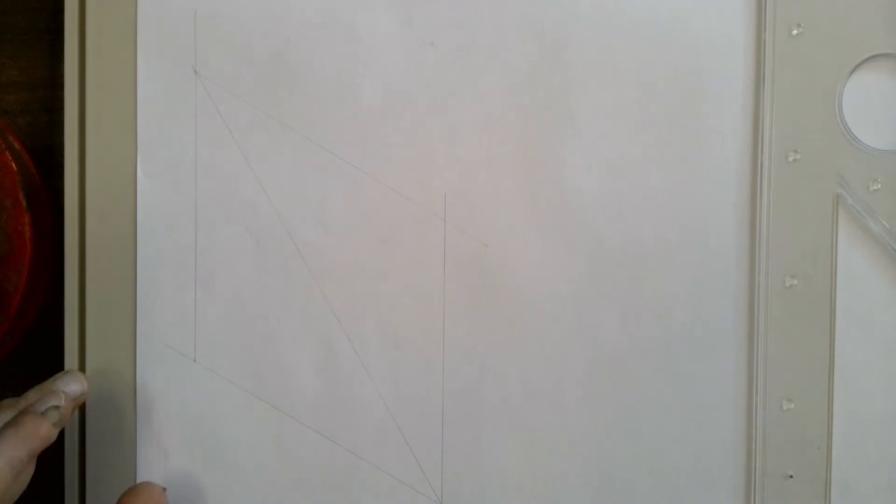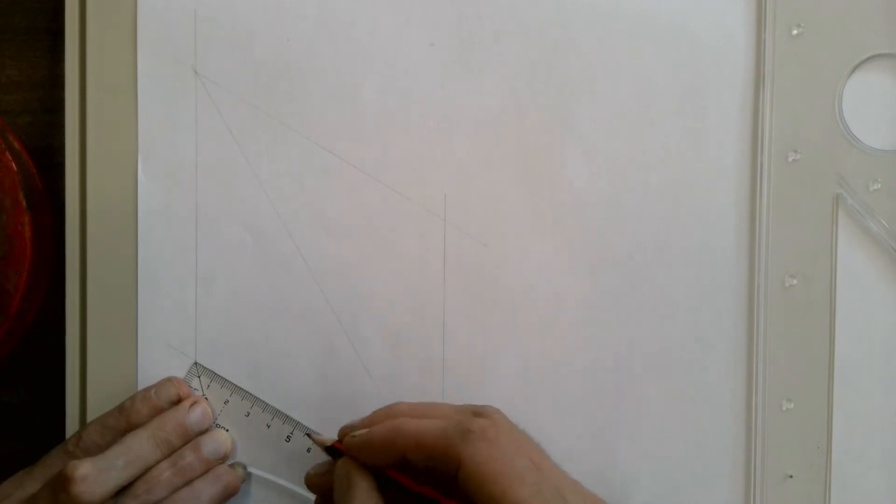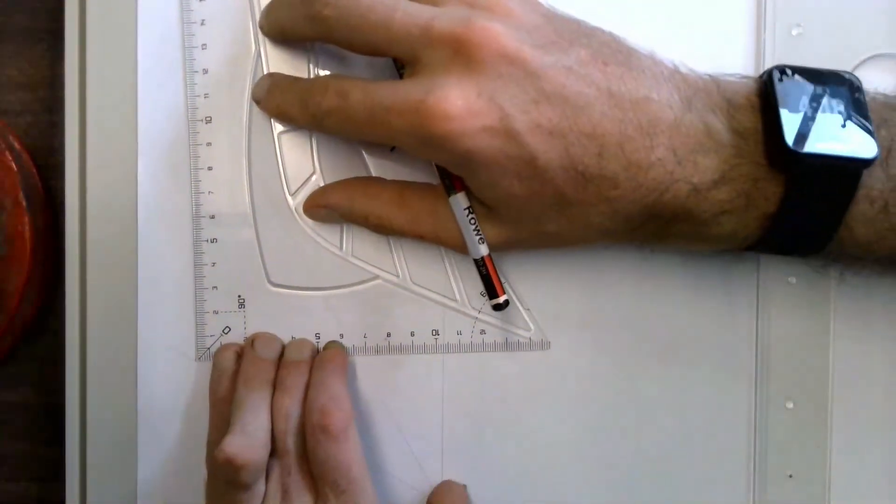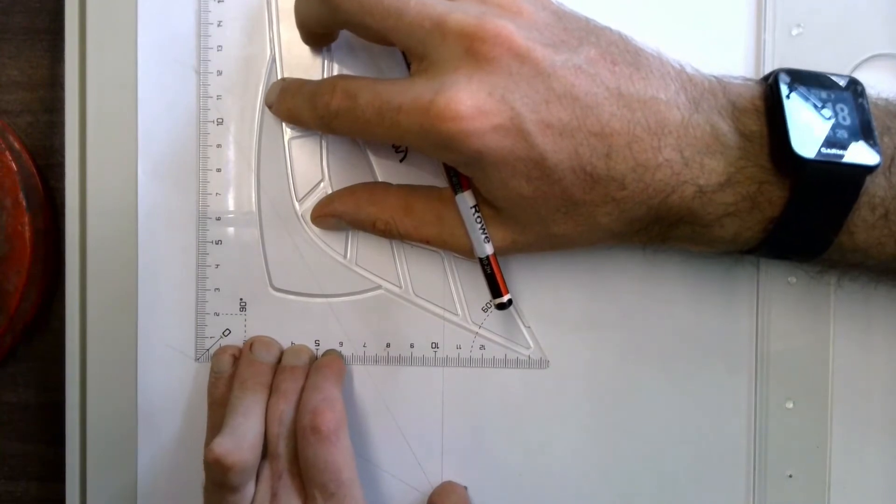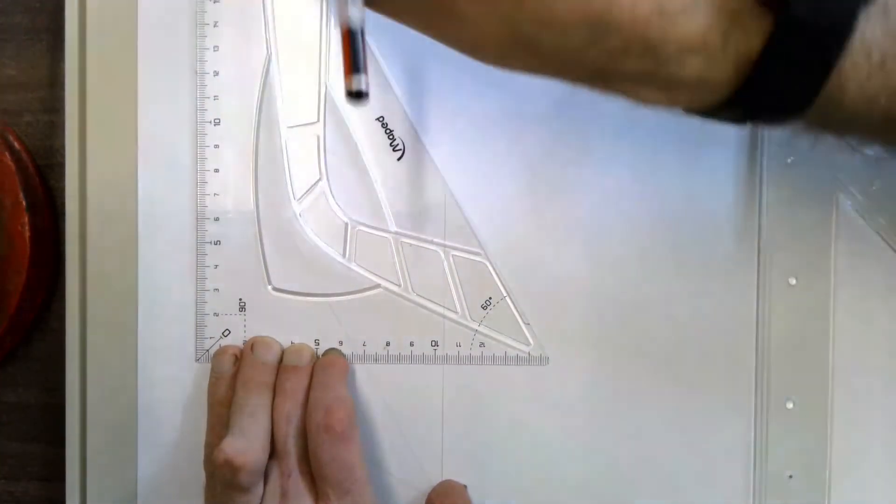Now find and lightly mark the center points of any pair of sides that form an obtuse angle in the isometric square. Again, be accurate.